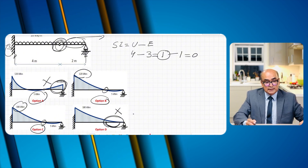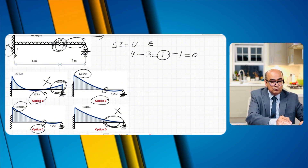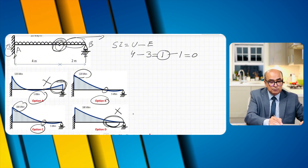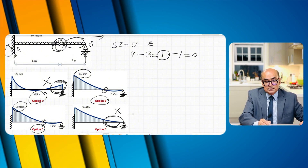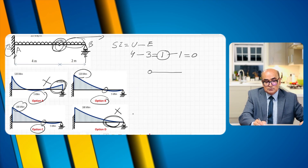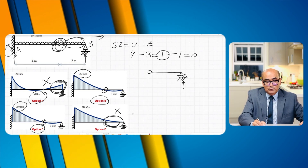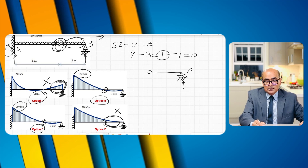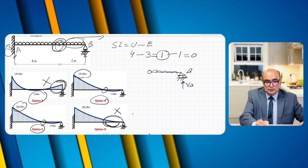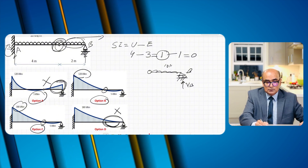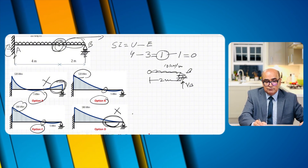Let me call the fixed end point A and the roller point B, and isolate the pin part. Isolating the pin gives a vertical reaction at B which I call VB, and a UDL of 10 kilonewtons per meter acting over two meters.